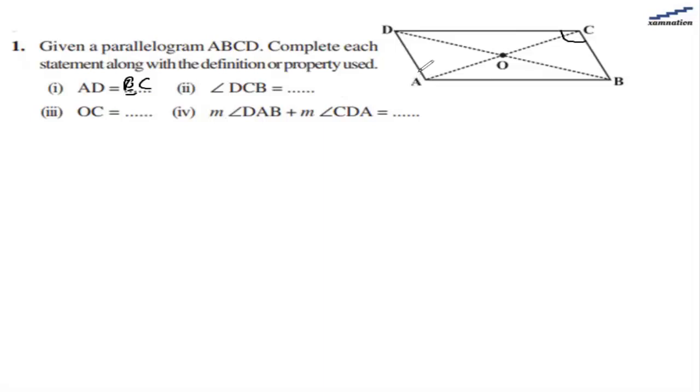Angle DCB is equal to angle BAD because opposite angles are also equal. What is OC?